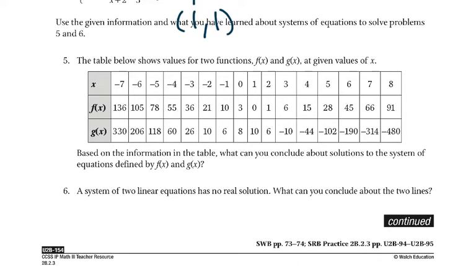Now, 5 and 6 says look at these two functions and use those. So the table shows us these x values of x. There's the values of their y values for f(x) and g(x). Based on this information, what can we conclude about solutions to the systems of equations defined by f(x) and g(x)? So they'll intersect at points that are the same. So notice g(x) is 330, f(x) is 136. As we keep going, what happens?